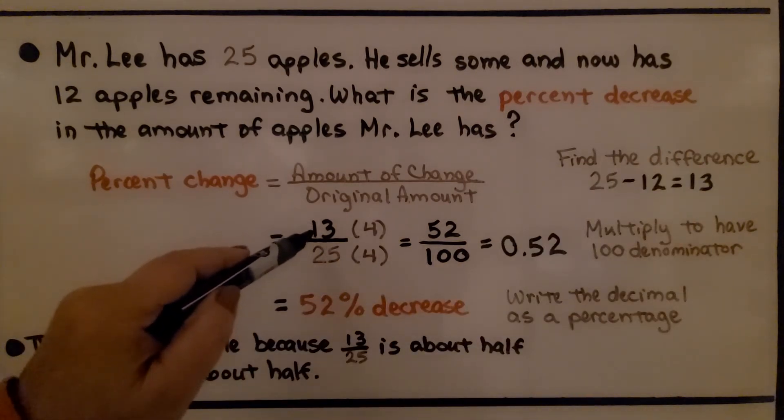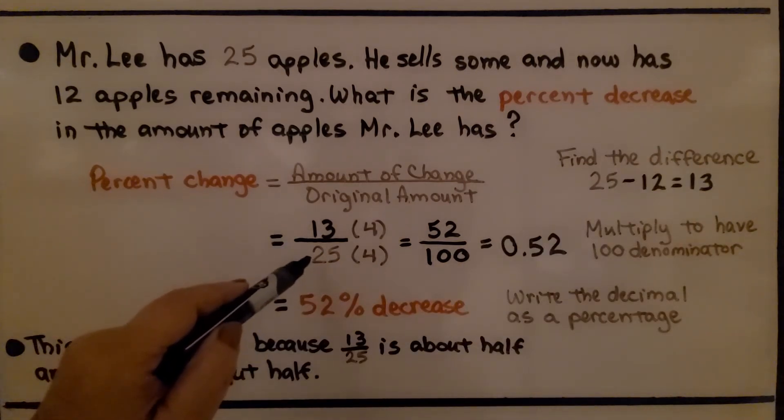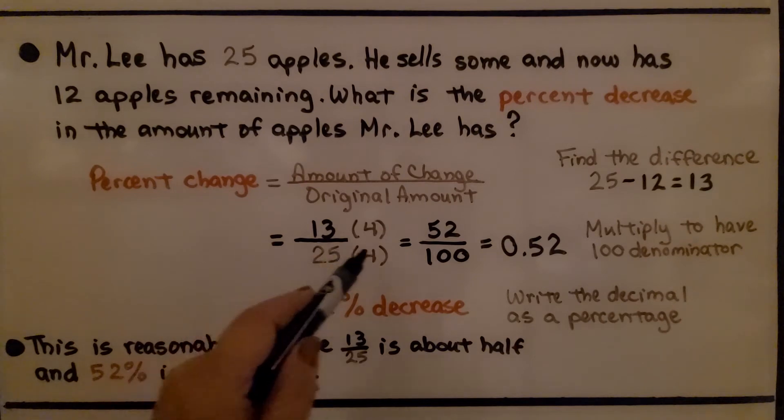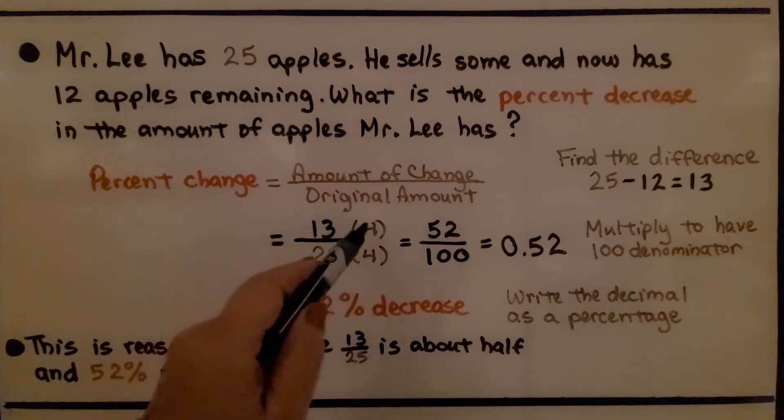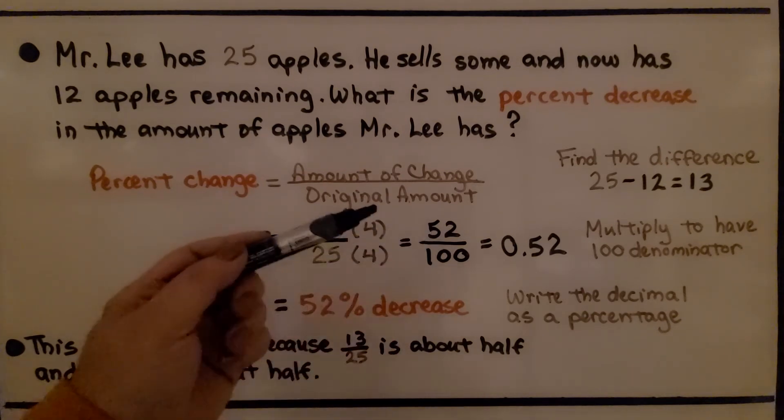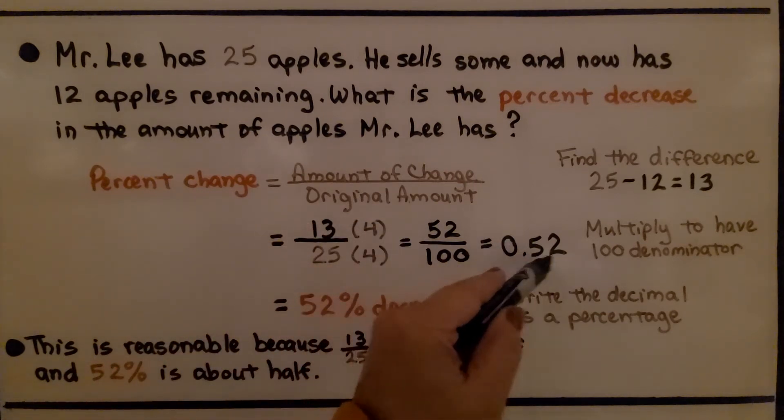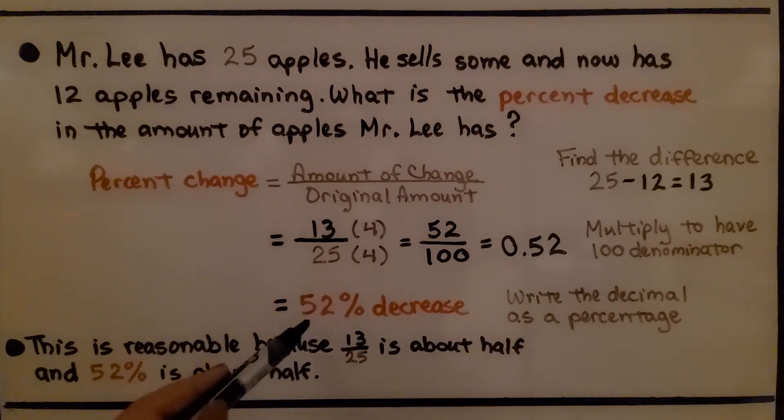We write the 13, the amount of change, over the original amount, 25, and we multiply this 25 so it will have 100 as a denominator. That means we need to multiply it by 4. So the numerator gets jealous. We got to multiply it by 4. 13 multiplied by 4 is 52. Now we have 52 hundredths. That's equal to 0.52 as a decimal. We write it as a percentage. We have a 52 percent decrease.